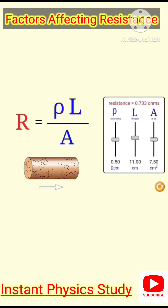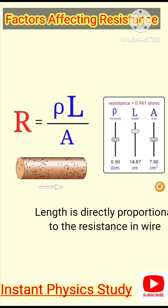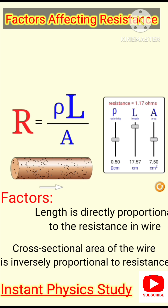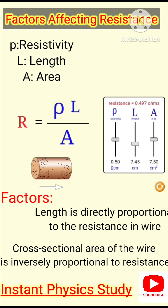Today we study factors affecting resistance. Length is directly proportional to resistance, while area is inversely proportional to resistance. So if we increase the length, resistance is also increased. But if we decrease the length, resistance is also decreased.